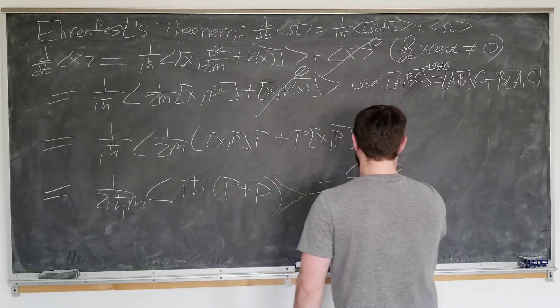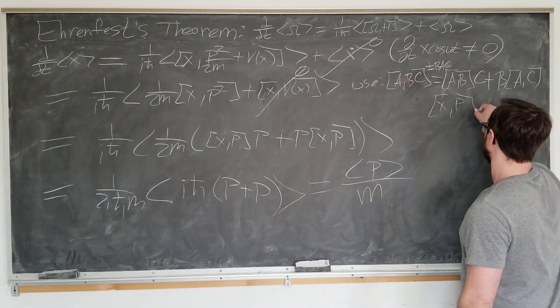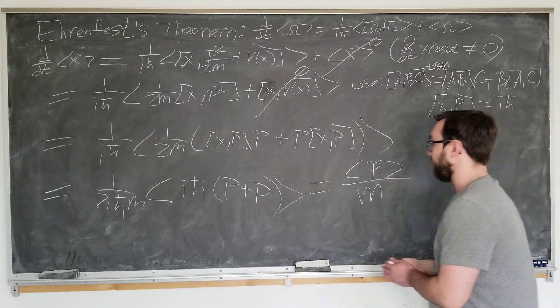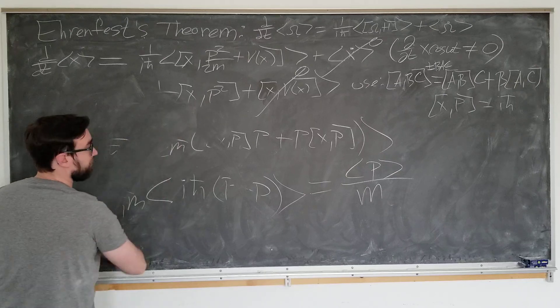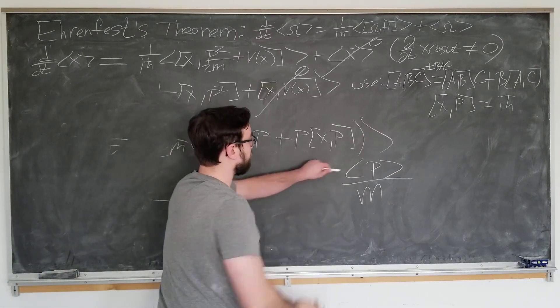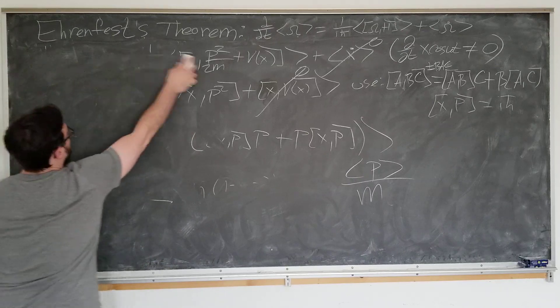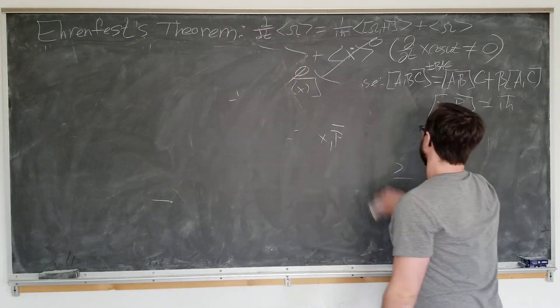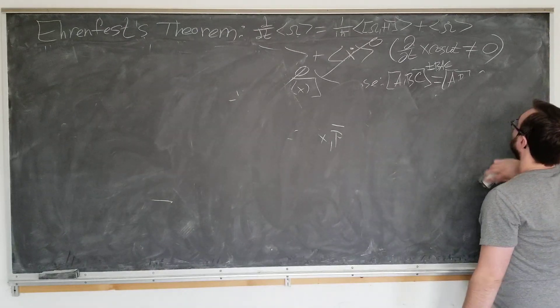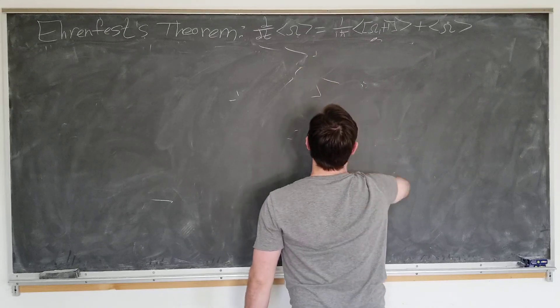Just the expectation value of p over m. But we did use x with p equal to i h bar as a previous reference. So we can rearrange this: p bracket equals m d by dt x bracket, which sounds very similar to the definition of the momentum. In fact, this relation is equivalent to what we know from classical mechanics.